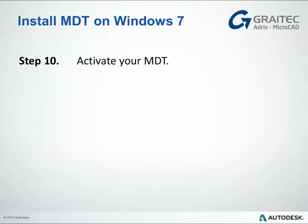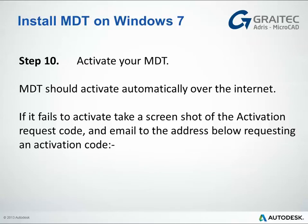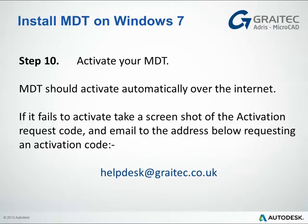Step 10: activate your MDT license. This should happen automatically over the internet, but should you have any problems, you can contact us. What you'll need to do is take a screenshot of the activation request code and email that to our support email below — we'll put this in the blog post so you can connect to that straight away. That should then have your Mechanical Desktop 2009 running on a Windows 7 machine. Thank you.